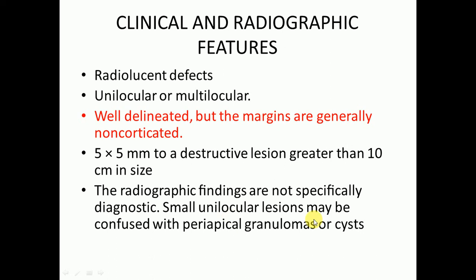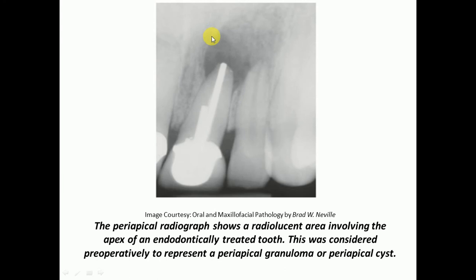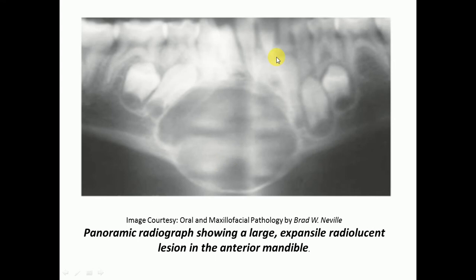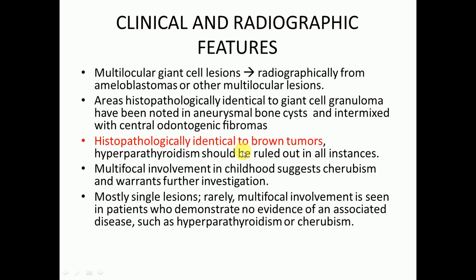Small unilocular lesions may be confused with periapical granulomas or cysts. Here you can see the radiolucent area — it is central giant cell granuloma, but we cannot distinguish radiographically whether it is central giant cell granuloma or simply a periapical cyst or granuloma. Here we can see a panoramic radiograph showing a large expansile radiolucent lesion in the anterior part of the mandible that has crossed the midline. If the lesion is multilocular, it may radiographically resemble ameloblastoma or other multilocular lesions.